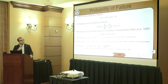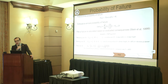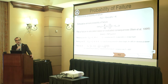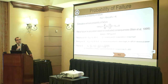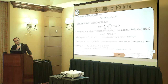We then find the cumulative probability of failure by first computing the point-in-time probability of failure and then accumulating it. After that, we evaluate the consequences of failure based on the model by Stein et al. Using the evaluated consequences and the probability of failure, we end up with the risk profile.